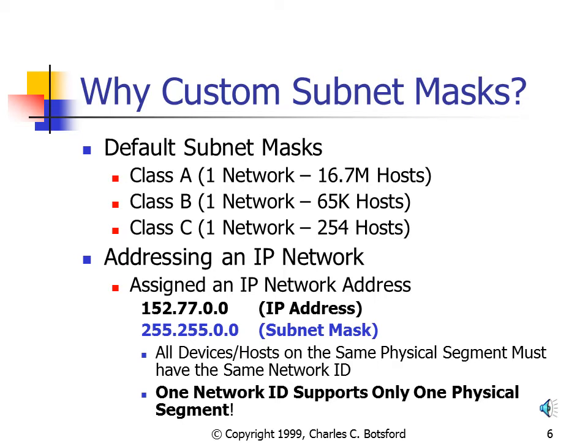According to our classful naming scheme, the address class also specifies the number of hosts we can support. Class A gives us a very large network with almost 17 million hosts. A Class B network is still very large at about 65,000 hosts. And a Class C network is essentially a smaller network with a maximum of 254 hosts.